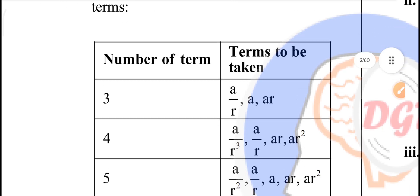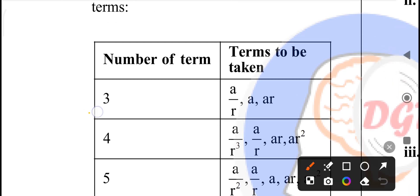When number of terms is 3, the terms are selected as a/r, a, and ar.